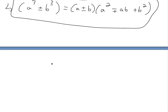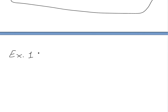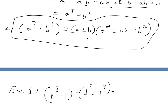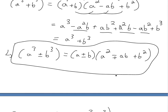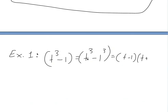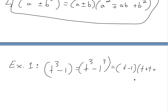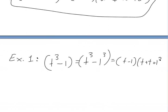As an example I used in my later video as part of a limit problem: if we have t cubed minus 1, this is a difference of cubes because 1 cubed is just 1. So t cubed minus 1 cubed equals t minus 1 times t squared plus t times 1 — which is just t — plus 1 squared. So we get t minus 1 times t squared plus t plus 1.